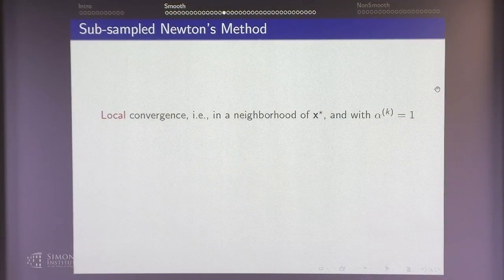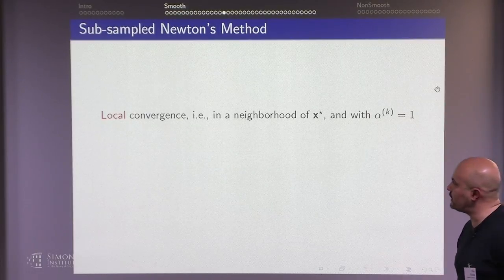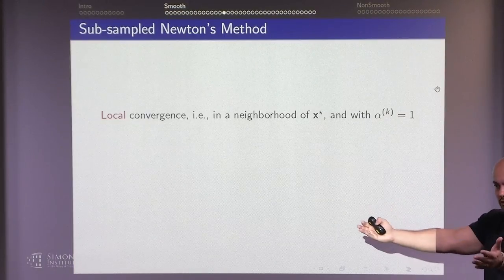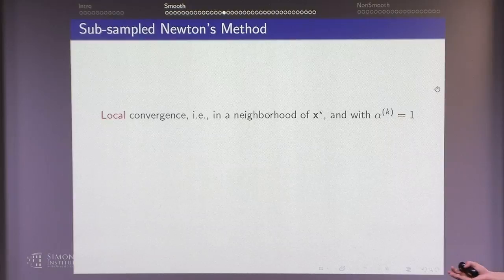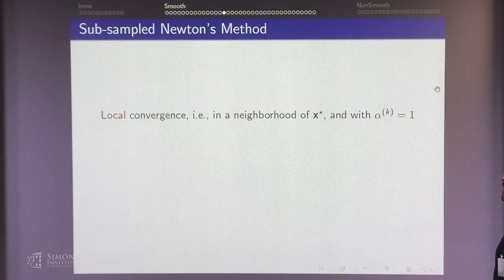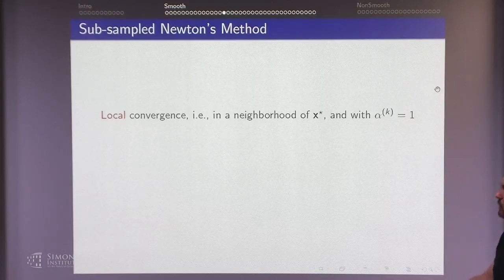Now let me turn to local convergence. Global convergence means starting from an arbitrary point and getting to the solution. Local convergence assumes you're already close enough to the optimal solution — that's what classical Newton analysis focused on. Many papers still focus on local convergence because some communities care about high precision. In machine learning, not so much, but not everything should be driven by machine learning.